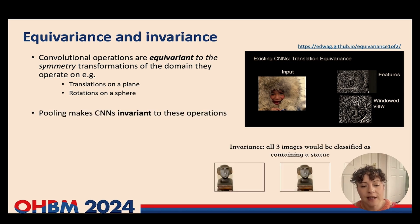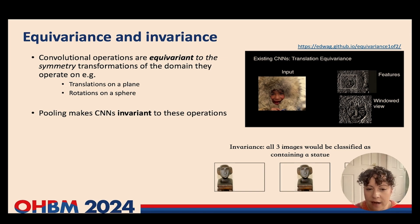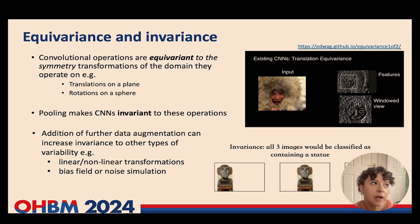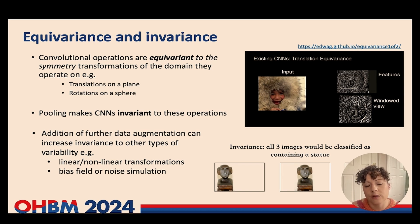Combining this equivariant property with pooling over these layers makes the CNN invariant to these operations, meaning it can detect an object wherever it is translated across the scene. Additionally, many people realise that if we augment our input data set by transforming our examples, we can make the network invariant to more types of transformations — for example, simulating more biological variability through applying linear or non-linear transforms, rotating inputs, stretching them, non-linearly deforming them, simulating the MRI bias field, or simulating noise.